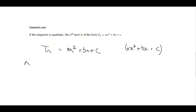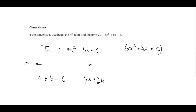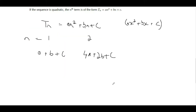When n = 1, we substitute 1 into the general term: 1 squared is 1, so we get a plus b plus c. When n = 2, we have 2 squared which is 4, so we get 4a plus 2b plus c. When n = 3, this becomes 9a plus 3b plus c.